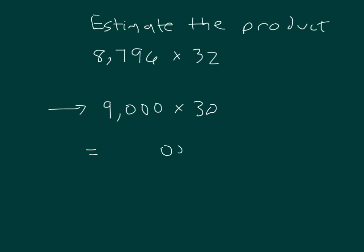We'll place zeros. 2, 3, 4 zeros, because we're multiplying thousands times tens. And 9 times 3 is 27. So I have the estimated product of 270,000.